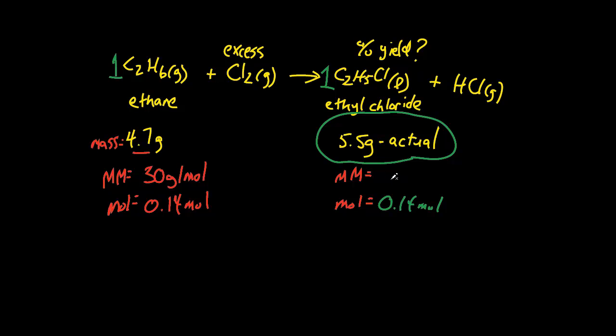If we know from the periodic table that the molar mass of ethyl chloride is 65 grams per mole, because you have 2 carbons, 5 hydrogens, and 1 chlorine which is about 36, then that means we could easily determine the theoretical yield of ethyl chloride.